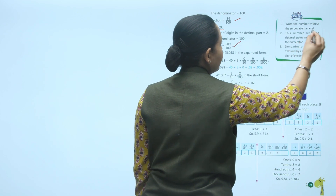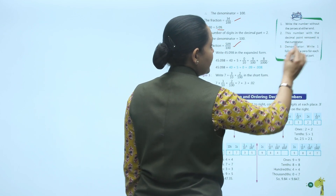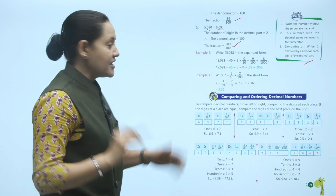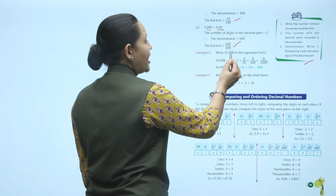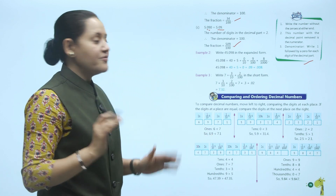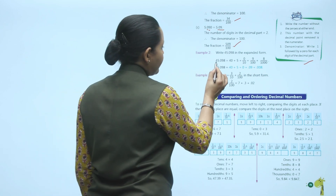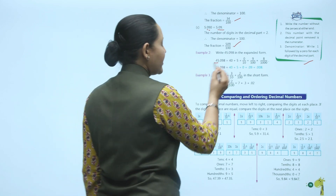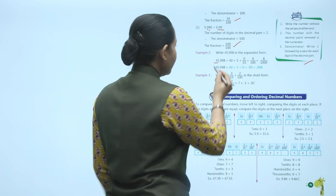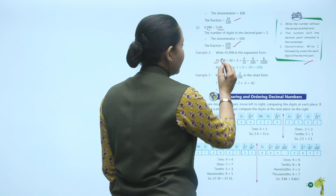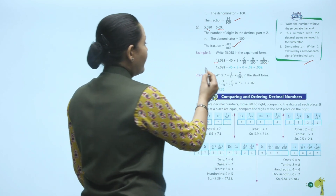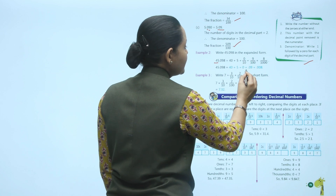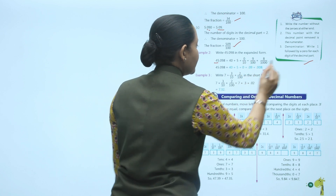Write the number without the zero at either end, remove the decimal point for the numerator, and write 1 followed by zeros equal to the number of decimal digits as the denominator. Another example: write 45.098 in expanded form. 45 is 40 plus 5. After the decimal: 0 is 0 upon 10, 9 is 9 upon 100, and 8 is 8 upon 1000. So 45.098 equals 40 plus 5 plus 0 upon 10 plus 9 upon 100 plus 8 upon 1000.